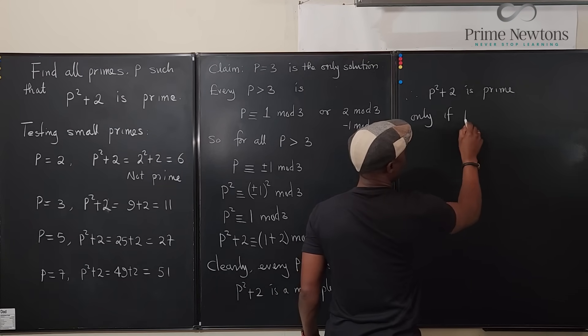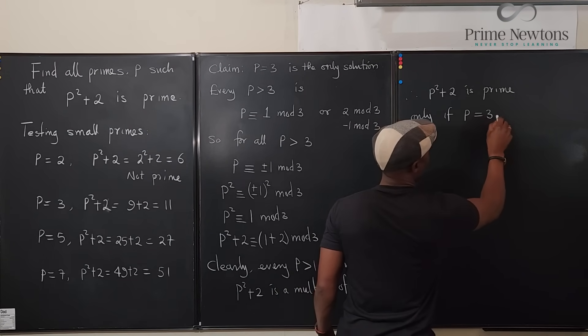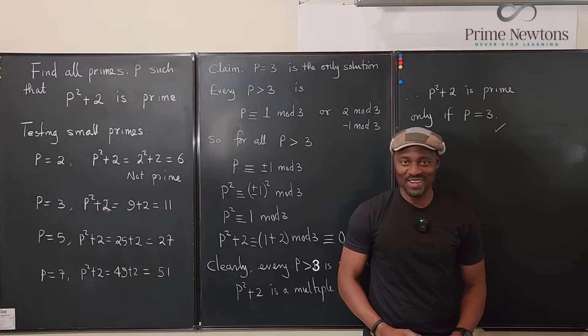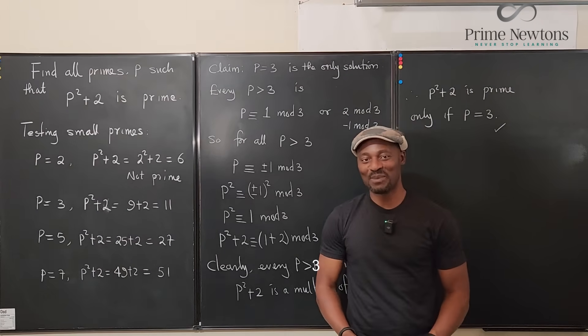Therefore, p squared plus 2 is prime only if p equals 3. Never stop learning. Those that stop learning stop living. Bye-bye.